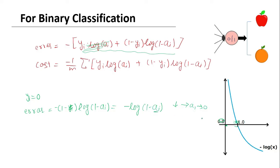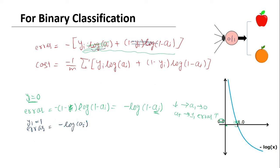Thus, as yi is close to ai we get less error, and if ai is far from yi we get high error. Similarly, if yi equals 1, the second term is cancelled and our error equals minus of log(ai). If ai approaches 1, we have a smaller error, and if ai approaches 0, we have a higher error. So here it also makes clear that as ai approaches the value closer to yi, we get less error, and if ai is far from yi, we get more error. Thus this term can represent the error for one observation.